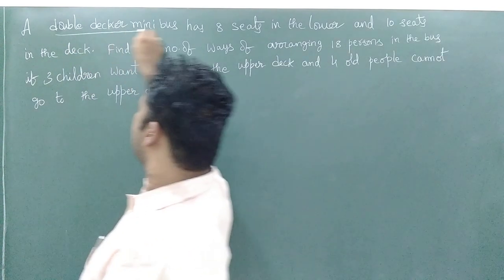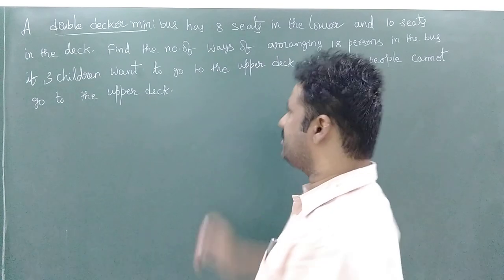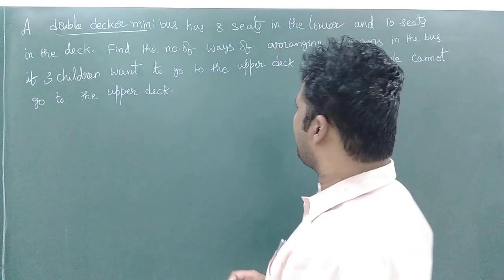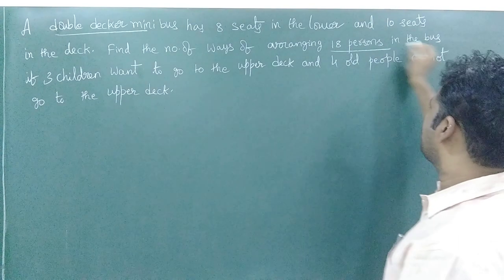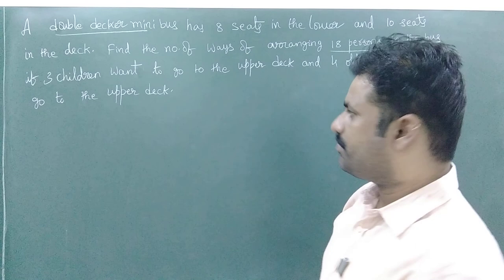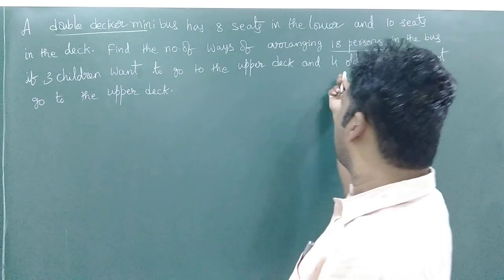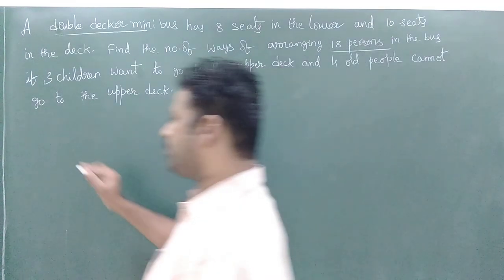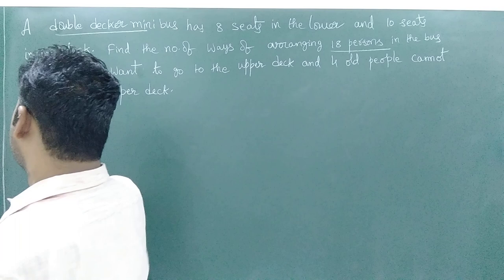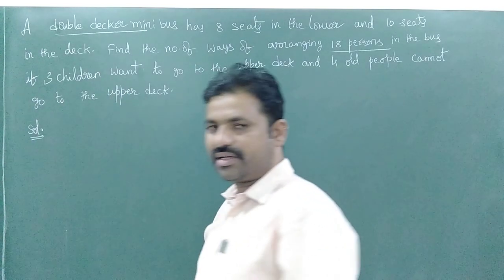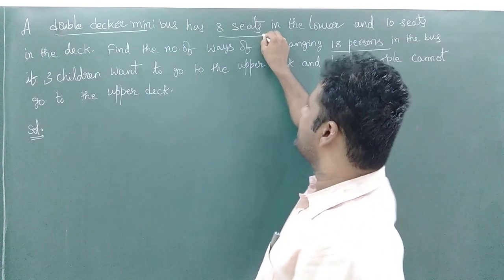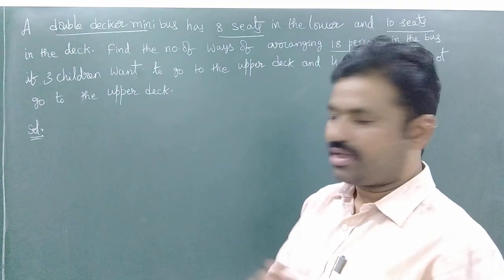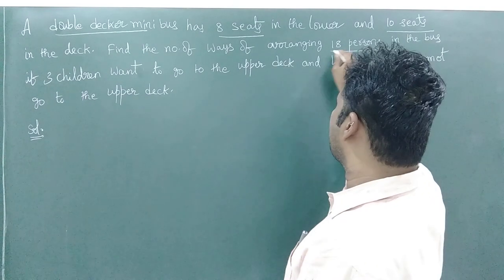A double decker mini bus has 8 seats in the lower deck and 10 seats in the upper deck. Find the number of ways of arranging 18 persons in the bus if 3 children want to go to the upper deck and 4 old people cannot go to the upper deck. This is a problem in permutations and combinations. The bus has 8 seats in the lower and 10 seats in the upper deck, so there are 18 seats total, and we are arranging 18 persons.